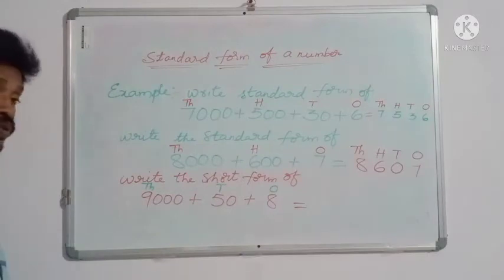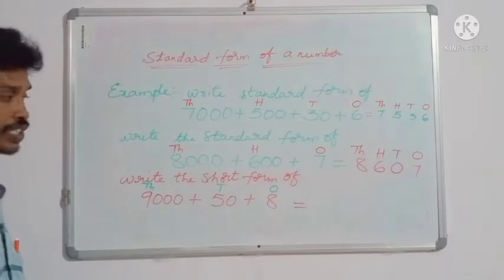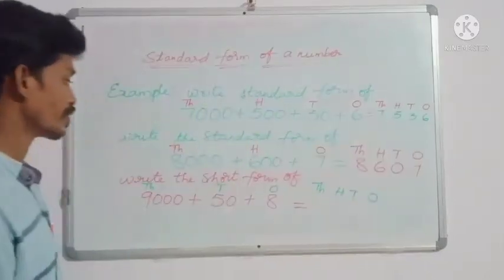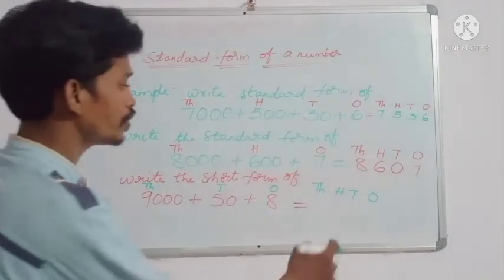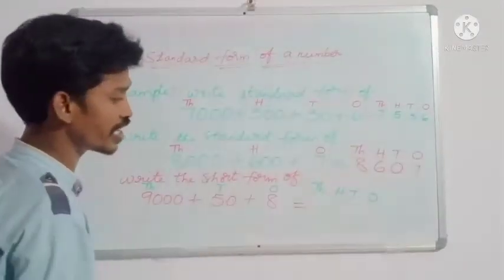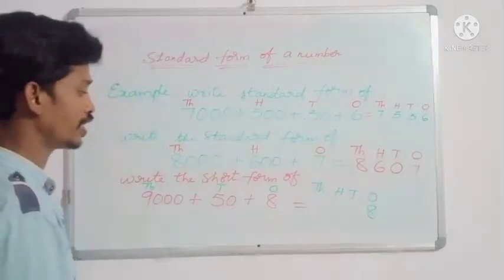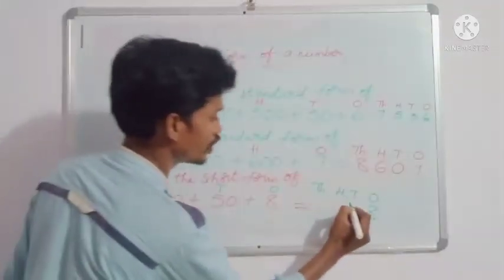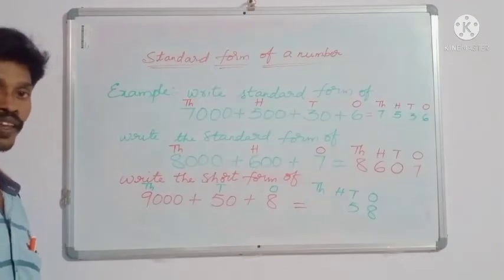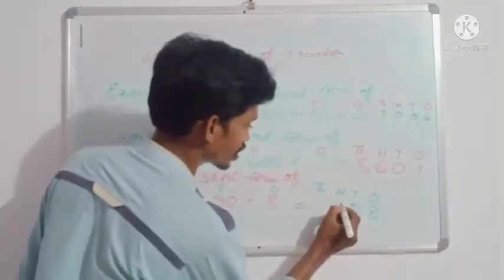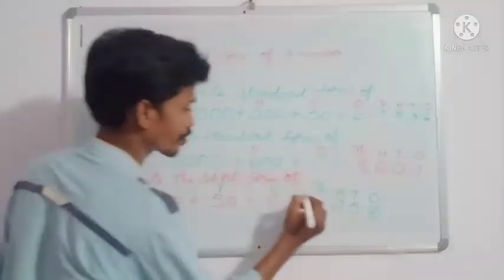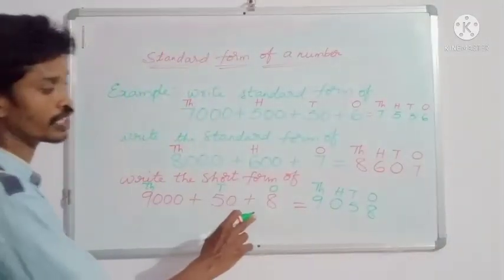Write all places up to thousands: ones, tens, hundreds, thousands. Now write the digits. In ones place, what is there? Eight. Five you have to write under tens place. Hundreds place — is there a hundreds digit? Not there. So you have to write zero under hundreds place. Next, thousands place — the digit is nine. What is the answer? 9058 is the answer.